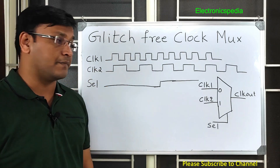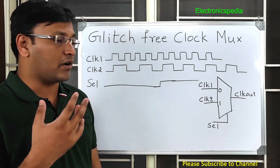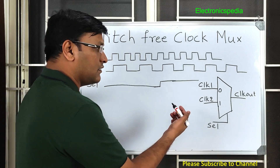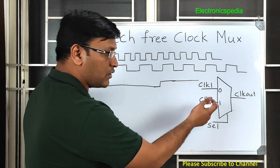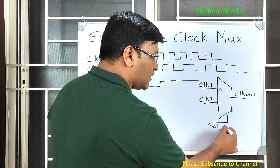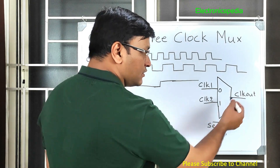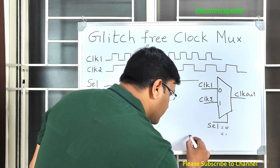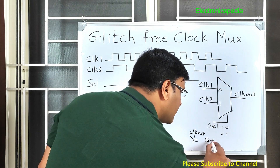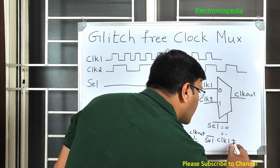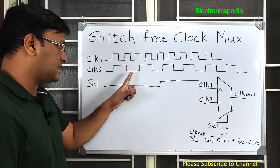When I say clock mux, what comes to mind is this simple circuit. This is a simple 2-to-1 mux: when the select line equals zero, clock one propagates to the clock output, and when select equals one, clock two propagates to the clock output. The equation is: clock_out = sel_bar × clock1 OR sel × clock2.